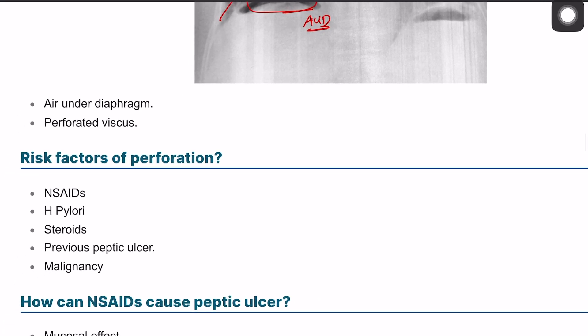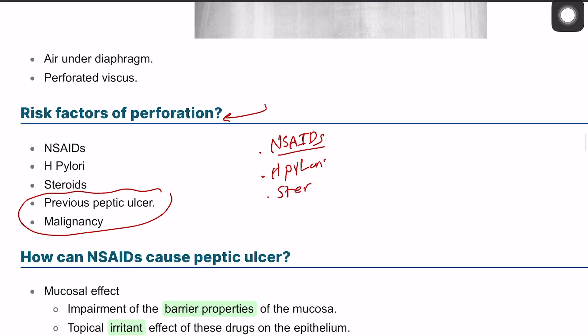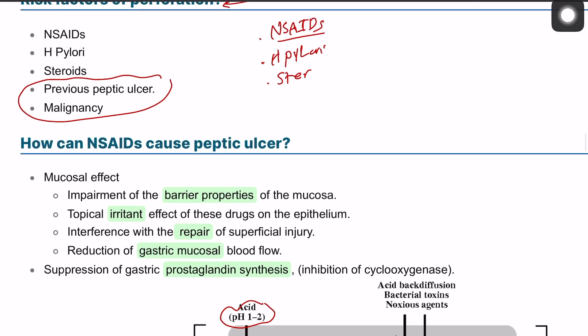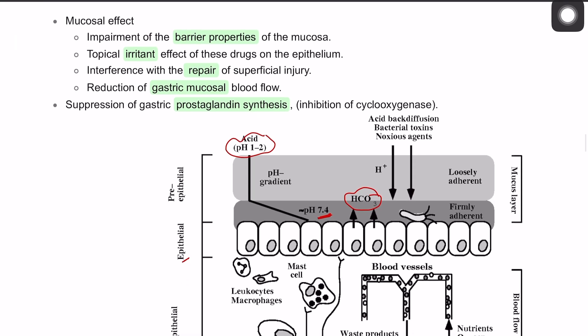The risk factors for perforation: NSAIDs are at the top of the list because they are very irritant to the gastric mucosa and cause atrophic gastritis. H. pylori is another important factor, along with steroids, previous peptic ulcer, and malignancy. These are the main risk factors to be aware of.